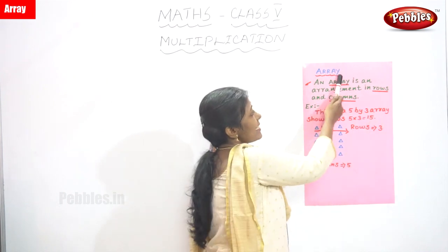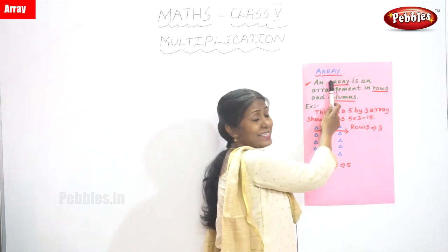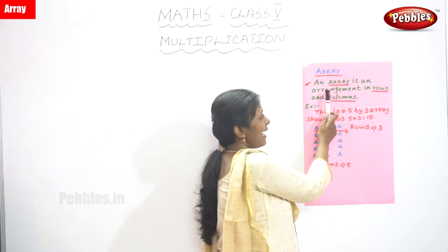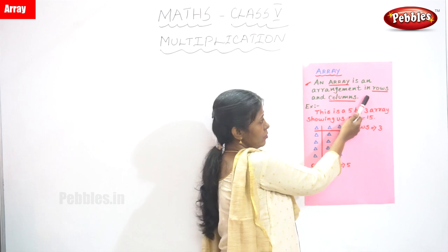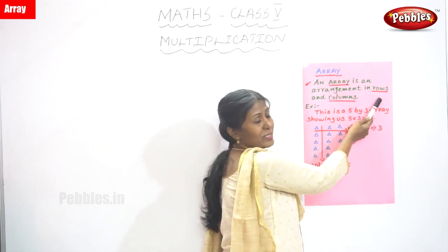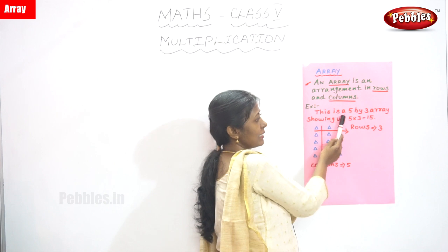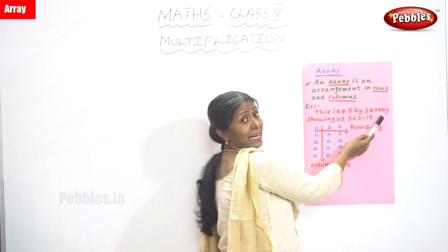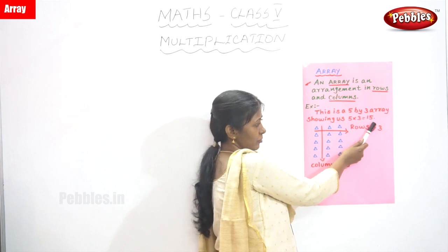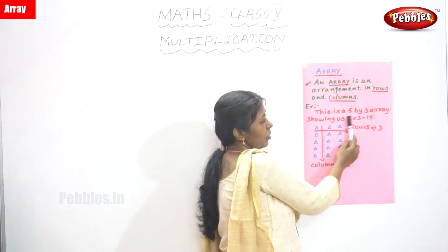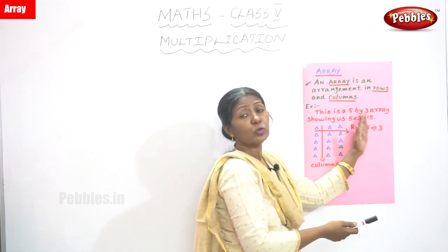Array. What is an array? It is a definition. Now we are going to see a definition of array. An array is an arrangement in rows and columns. For example, this is a 5 by 3 array showing us 5 into 3 is equal to 15. So don't confuse and don't worry — it is nothing but 5 into 3 equals 15.